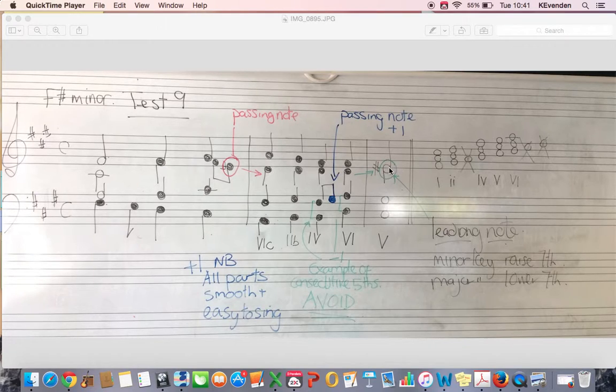Now obviously this E sharp isn't going anywhere because it's the last chord, so there's not an awful lot you can do about that one. And also it is an imperfect cadence so it's supposed to sound up in the air.